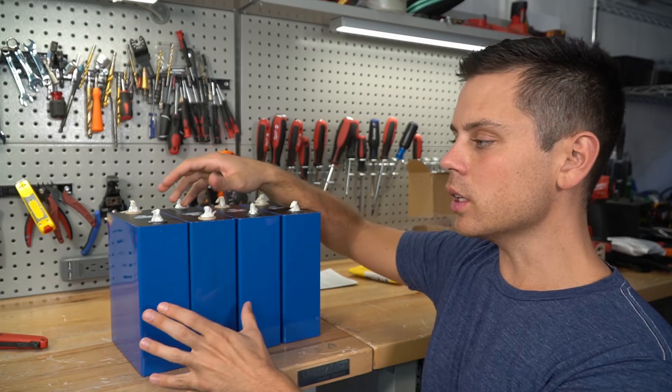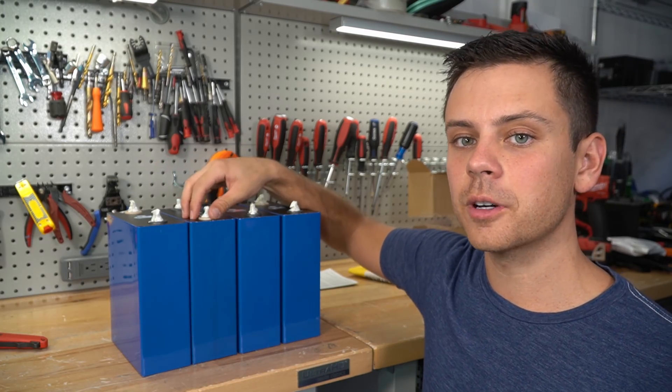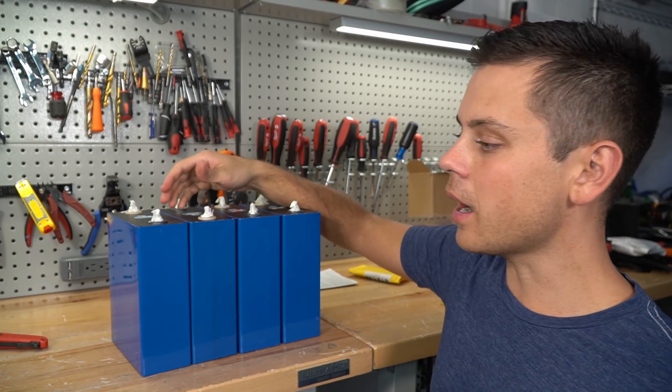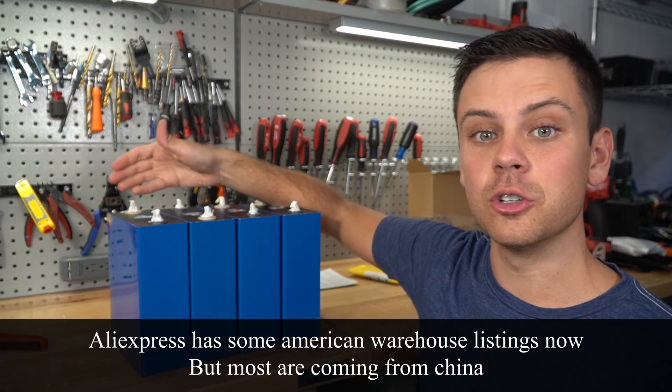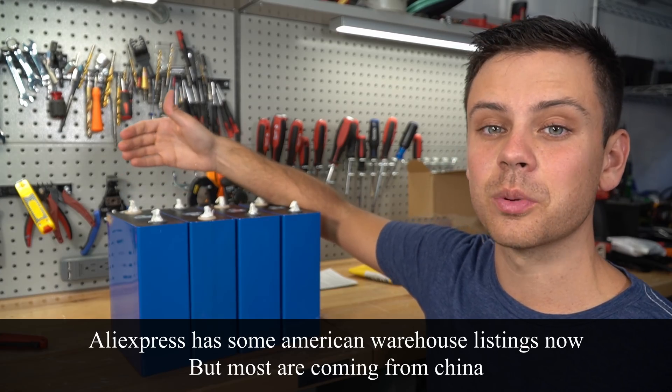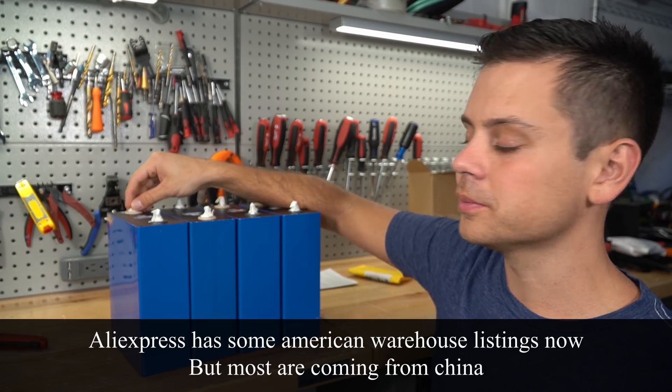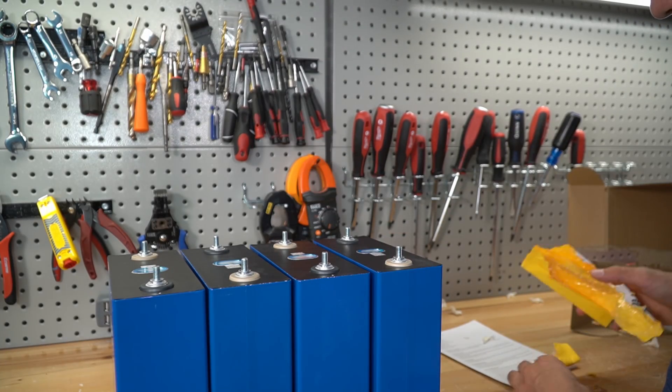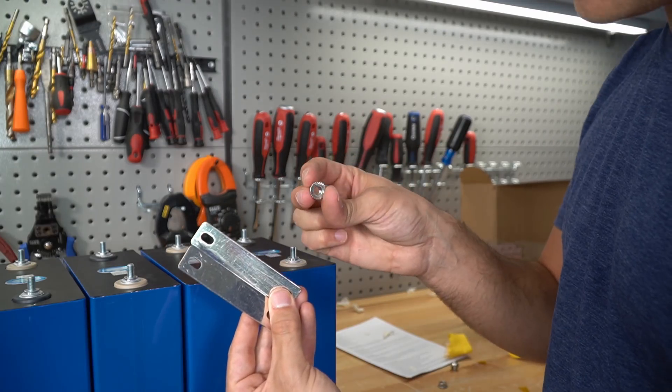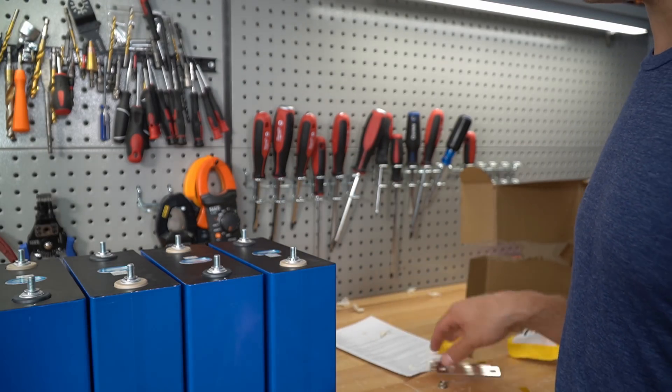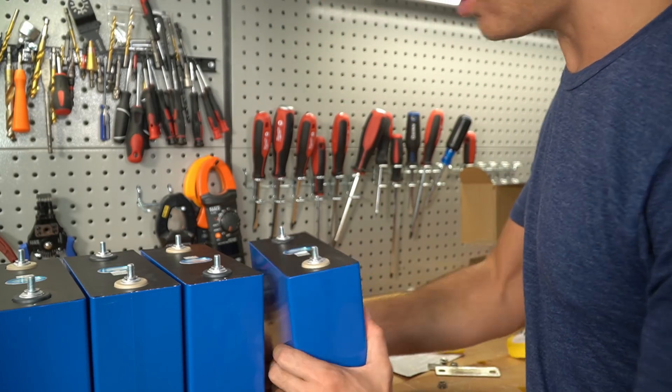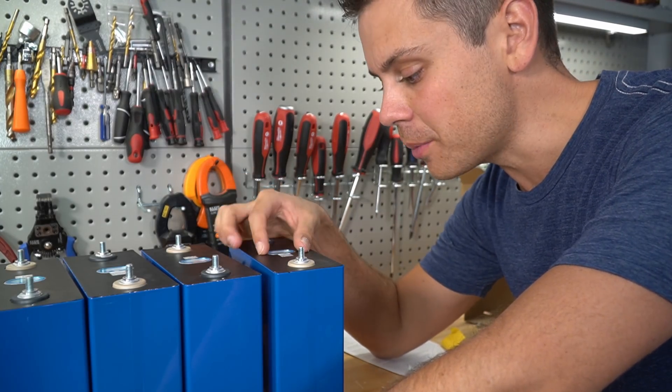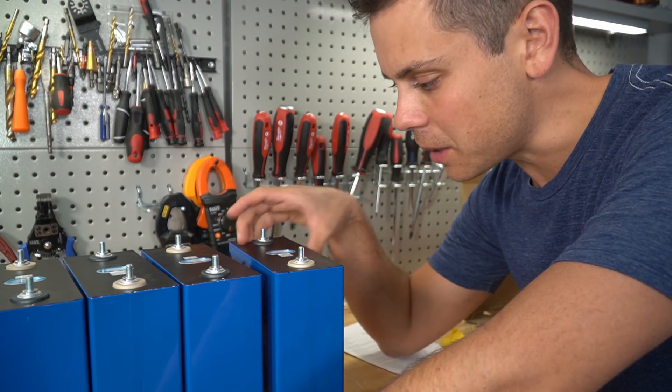What's really nice about these cells is they come from an American warehouse, so you can get them in like a week, maybe two weeks. If you buy them off AliExpress it will take two to three months, sometimes upwards of five months. These cells come with welded studs which is really nice. I just checked and these have the same barcode, the same overpressure relief valve, same dimensions - they are the same cells that I just bought but unfortunately they cost more.